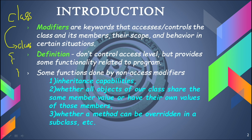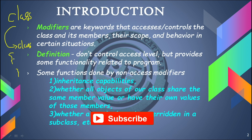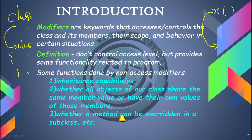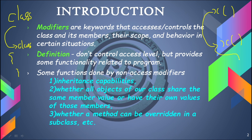The third point is whether a method can be overridden in a subclass or not. Overriding means when we import a method from one class to another class, the same method name is used. To reduce the problems of overriding, we use non-access modifiers. When a method is overridden in a subclass, we use non-access modifiers to reduce errors and make the program effective so the programmer can understand it clearly.